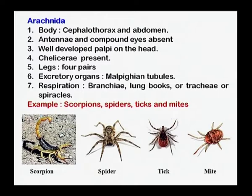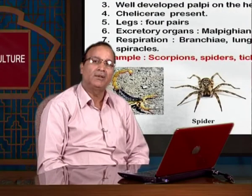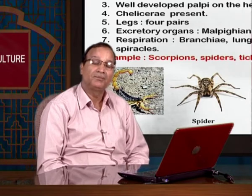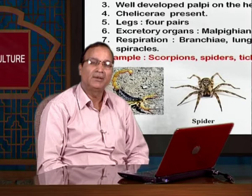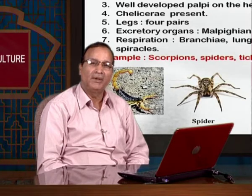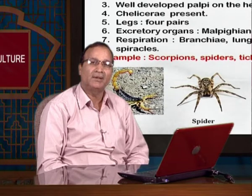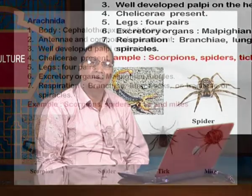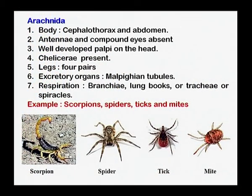Ticks and mites are also in Arachnida. The important characters of class Arachnida: the body is divided into two parts — cephalothorax as well as the abdomen. Chelicerae are present, which are stylet-like or very fine needle-like structures. Besides this, the important character of this class is the presence of four pairs of legs, meaning they are eight-legged animals.